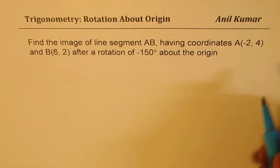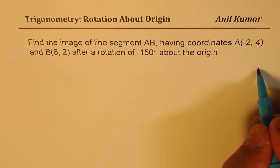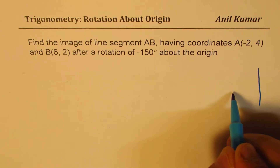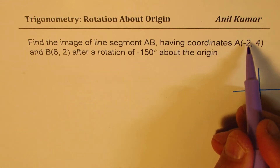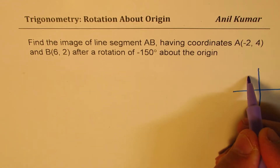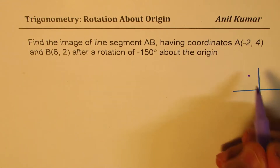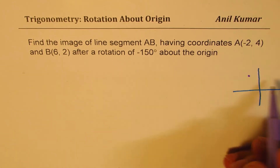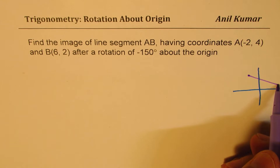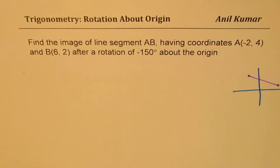Let's try to understand the situation given to us. Let me sketch the scenario here. We have point A with coordinate (-2, 4), which is somewhere in the second quadrant, and point B with coordinate (6, 2), which is in the first quadrant. So that is the position of our segment AB.